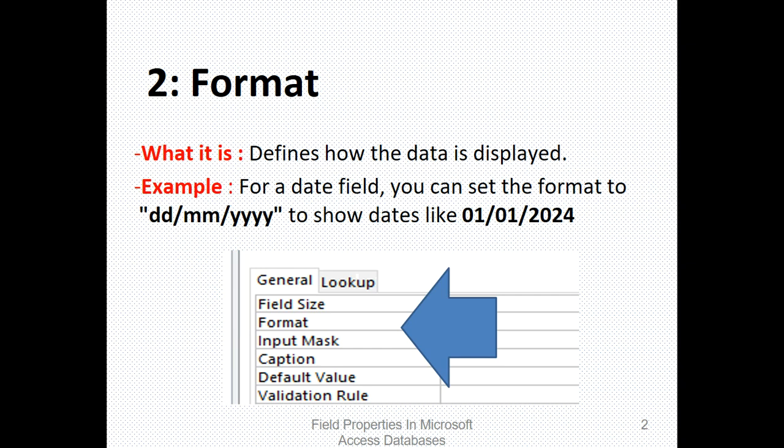An example is first January 2024. You click on the date field, go to format, then type DD/MM/YYYY. That will give you the date format of day, month, year.